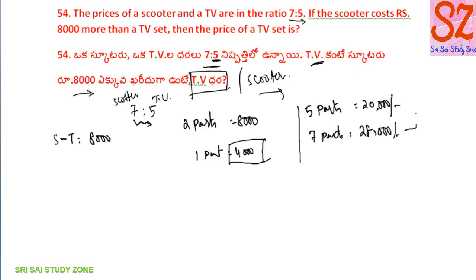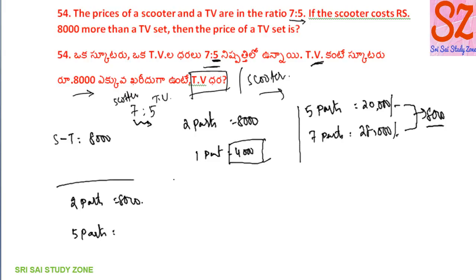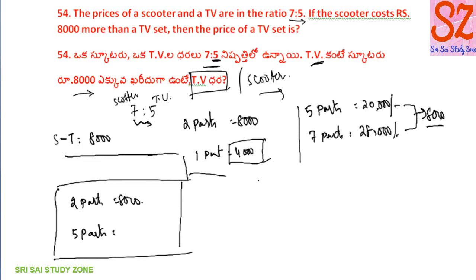This difference — the ratio is 7 is to 5. So 2 parts are different, 8,000. One part is 4,000. So 5 parts TV cost. This is an explanation-wise question. Next question.